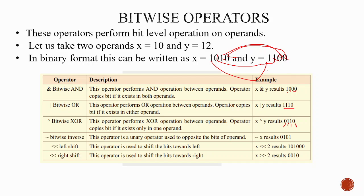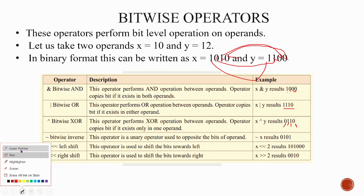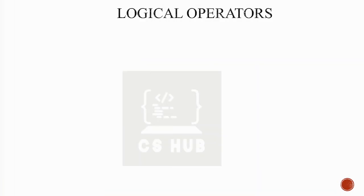If you see bitwise inverse (~), the bits 0,1,0,1 become 1,0,1,0. Then left shift: x left shift 2 means we shift the bits of x to the left position. x left shift 1 or 2 shifts bits left by that number. This covers bitwise operators.